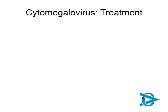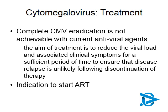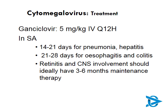Although we do have treatment for cytomegalovirus, similar to our other herpes viruses, you cannot completely eradicate it. The aim of treatment is to reduce the viral load and the associated clinical symptoms, and to put the illness into a remission period. It's very important to start ARVs to help the immune system recover and reduce the chances of relapse. Treatment in children is Ganciclovir at 5 mg/kg IV 12-hourly — usually 14 to 21 days for CMV pneumonitis or hepatitis, and 21 to 28 days for esophagitis or colitis. Retinitis and CNS involvement should ideally have three to six months of maintenance therapy, and these cases should be managed by an expert.